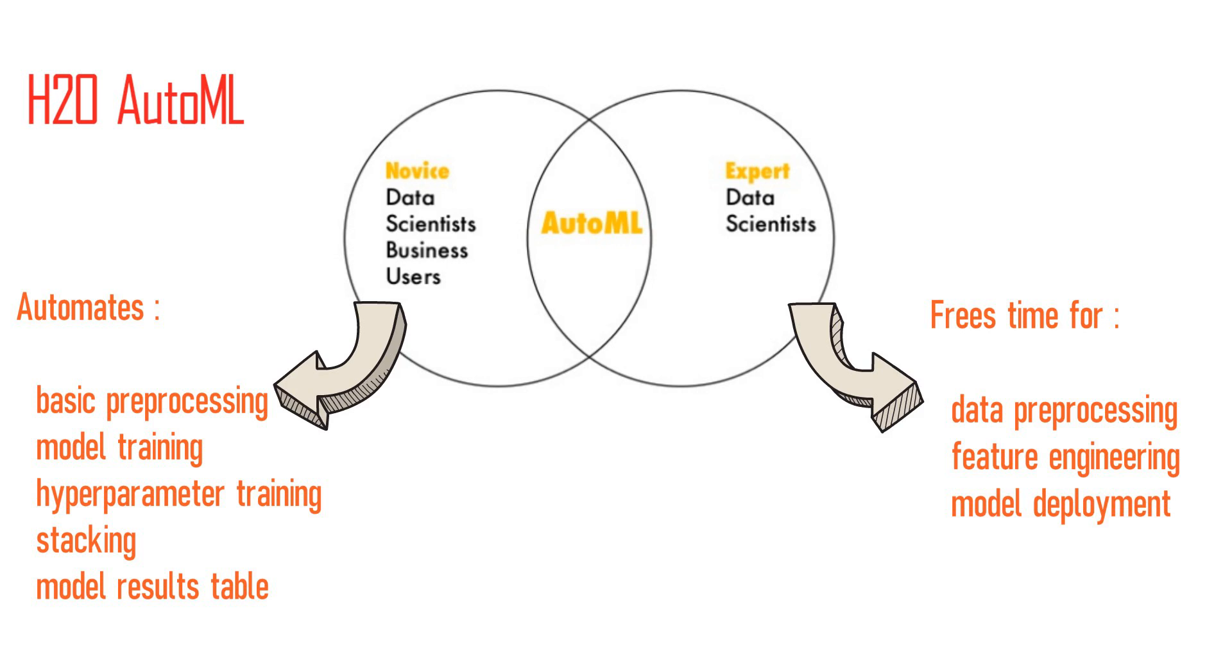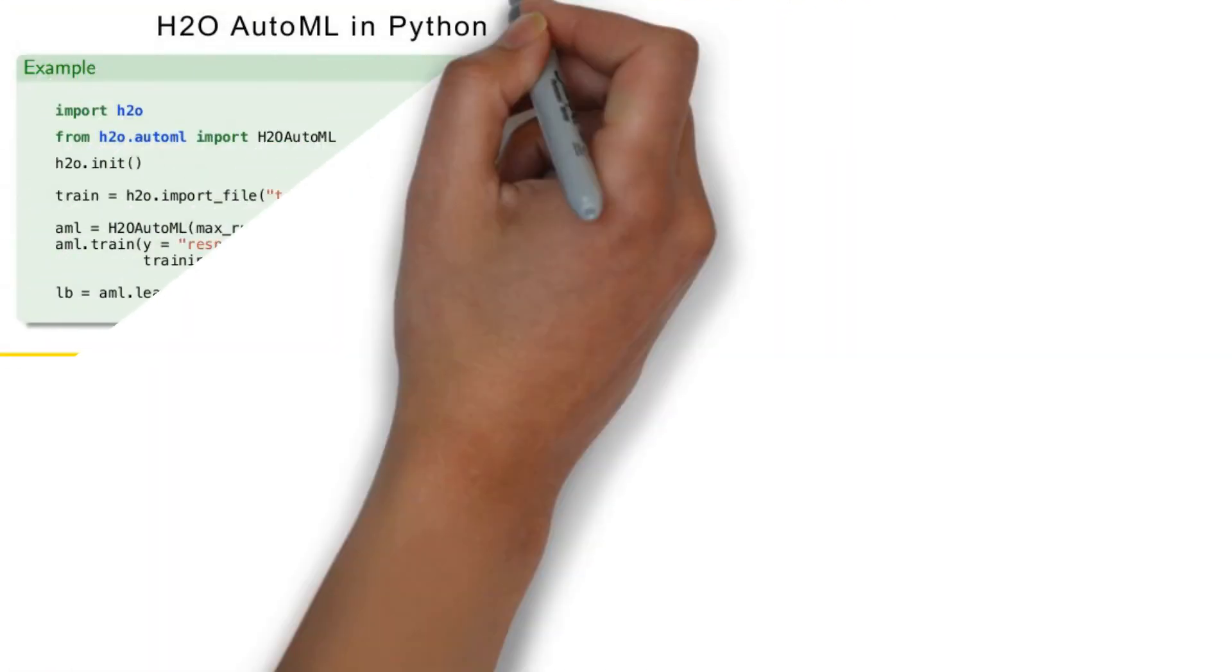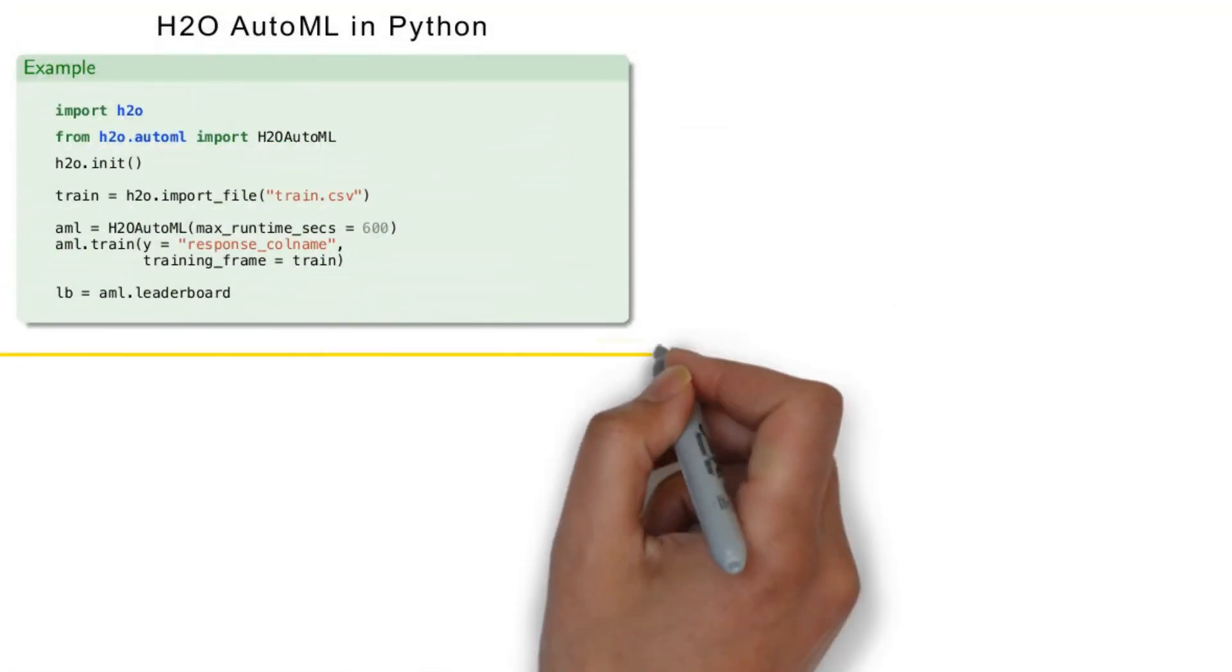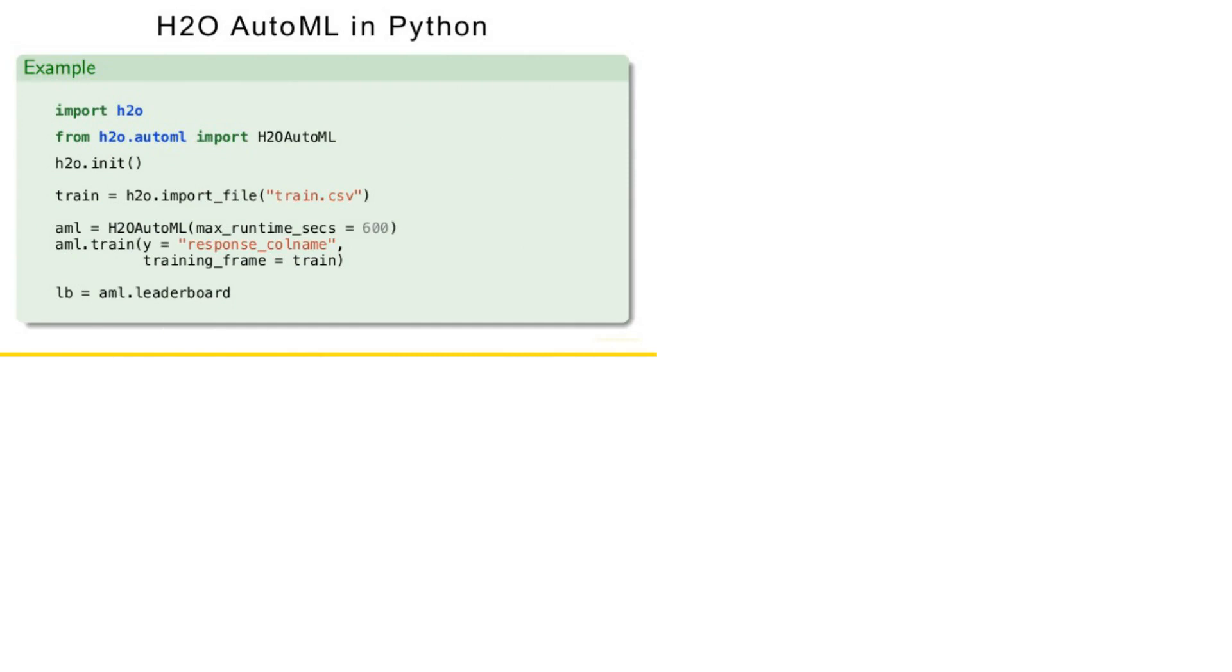Such as data preprocessing, feature engineering, and model deployment. The H2O AutoML interface is designed to have as few parameters as possible so that all the user needs to do is point to their dataset, identify the response column, and optionally specify a time constraint or limit on the number of total models trained.